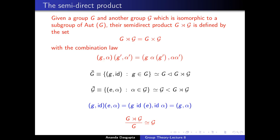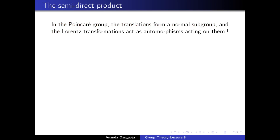To make these notions clearer, let us look again at the Poincaré group. In the Poincaré group, the translations form a normal subgroup, and the Lorentz transformations act as automorphisms which act on the translations to produce new translations. So the Poincaré group is really the semi-direct product of the translation group with the Lorentz group. The Lorentz group is a subgroup of the Poincaré group, while the translation group is a normal subgroup. The fact that the translation group is a normal subgroup is something you can easily show just by referring to the composition law for Poincaré group elements.